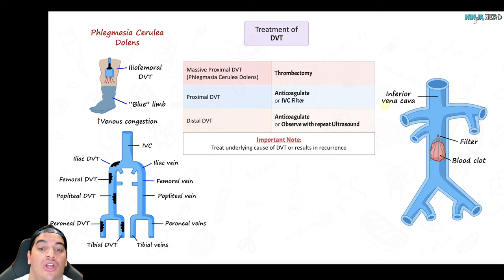To approach a suspected PE, first get a chest X-ray and ECG. Any time a patient has dyspnea, chest pain, or hypoxemia you should obtain these. The chest X-ray is usually completely normal in PE, which is an important boards fact, but helps rule out pneumonia or pulmonary edema. The ECG is helpful for boards: look for S1Q3T3 — an S wave in lead I, Q wave in lead III, inverted T wave in lead III — along with right bundle branch block and right axis deviation, all signs of right heart strain.